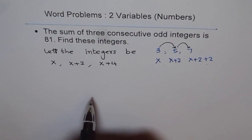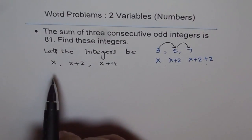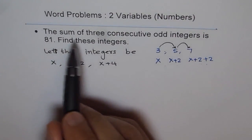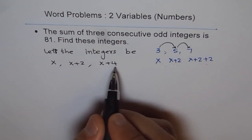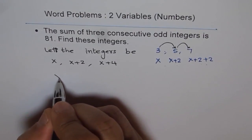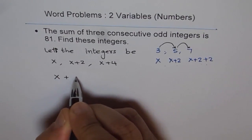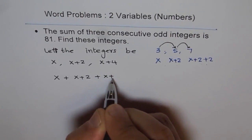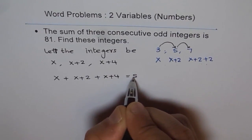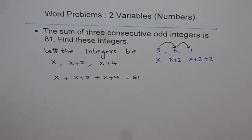Whenever you read consecutive integers, try to put only one variable and then write your equation. So the equation is: let the integers be x, x+2, and x+4. Read the problem once again - the sum of three consecutive odd integers is 81. If you add them, it should be 81. So let's add them and write down the equation: x + (x+2) + (x+4) = 81.